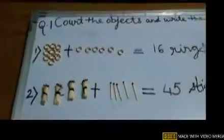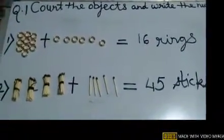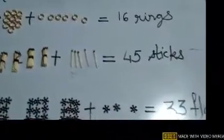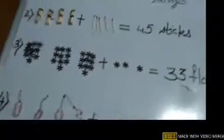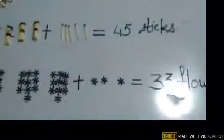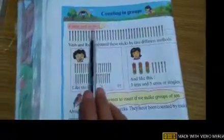I hope children you have understood how to count objects in groups and how to write their numbers. Now we are going to our maths textbook. Open your maths textbook page number 12 and let's read together: Counting in groups. Now count and write.